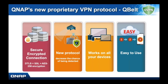What's special about QBelt is it offers DTLS plus SSL plus AES 256-bit encryption — a very high degree of encryption, extremely hard to crack. It's a new protocol, which decreases the chances of it being detected. It should work on all your devices and it's easy to use. One of the reasons it's easy to use is because we have a QVPN client app to make it easier to connect.